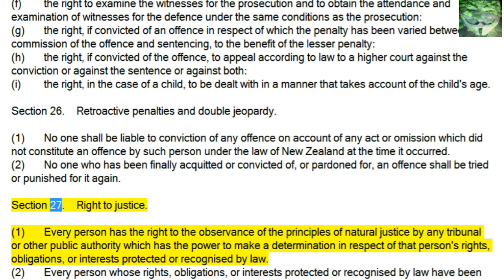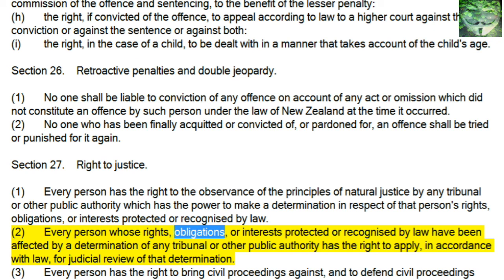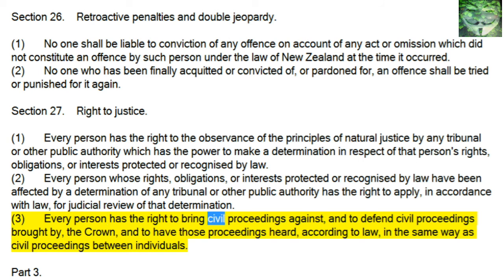Section 27, Right to Justice: 1. Every person has the right to the observance of the principles of natural justice by any tribunal or other public authority which has the power to make a determination in respect of that person's rights, obligations, or interests protected or recognized by law. 2. Every person whose rights, obligations, or interests protected or recognized by law have been affected by a determination of any tribunal or other public authority has the right to apply, in accordance with law, for judicial review of that determination. 3. Every person has the right to bring civil proceedings against, and to defend civil proceedings brought by, the Crown, and to have those proceedings heard, according to law, in the same way as civil proceedings between individuals.